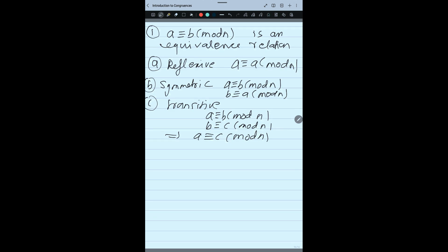The second important property is, if suppose I am giving you A1 congruent B1 modulo N, same way A2 congruent B2 modulo N, then I can write A1 plus A2 congruent B1 plus B2 modulo N. Same way, I can write A1 minus A2 congruent B1 minus B2 modulo N.